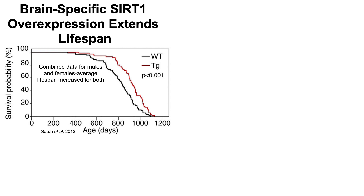Brain-specific SIRT1 overexpression — higher levels of SIRT1 only in the brain — extends lifespan. Looking at survival probability on the y-axis plotted against age in days, with combined data for males and females, wild type shown as the dark line and transgenic mice with higher brain SIRT1 shown separately, we can see a significant extension in average lifespan, but not maximal lifespan, for brain-specific SIRT1 overexpression.